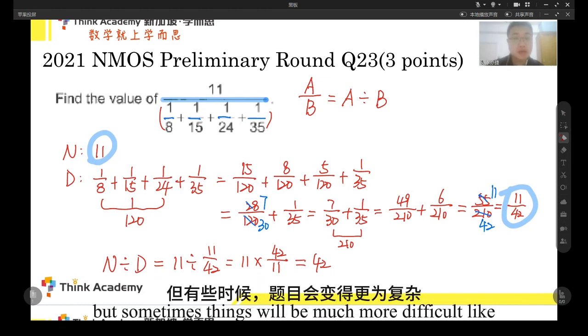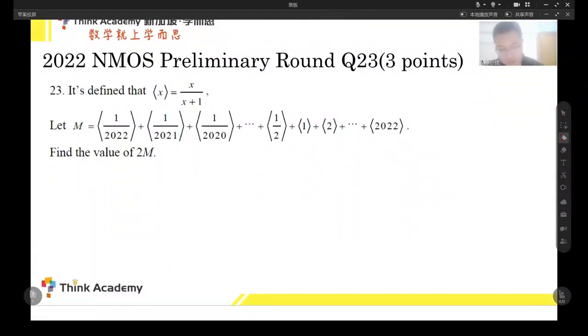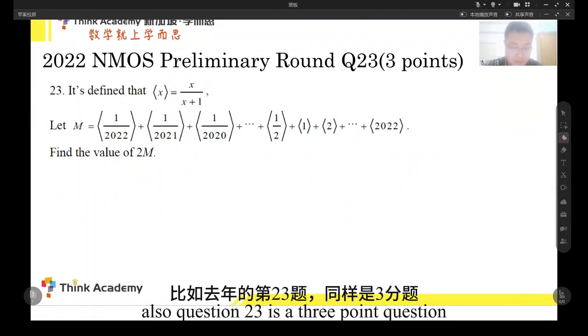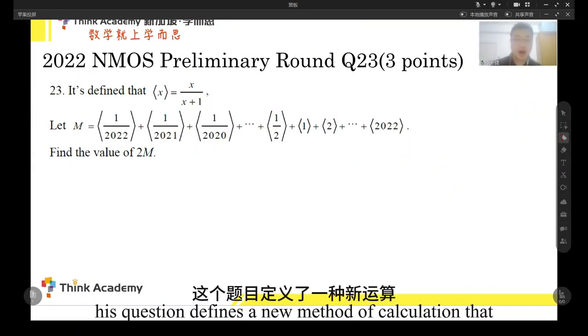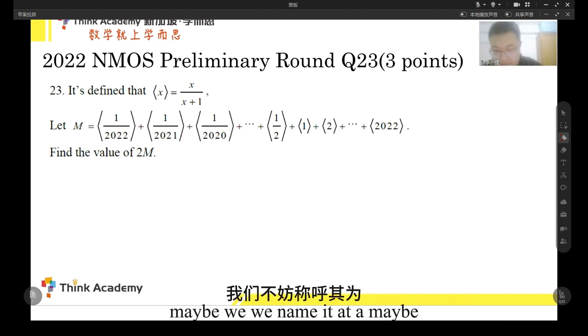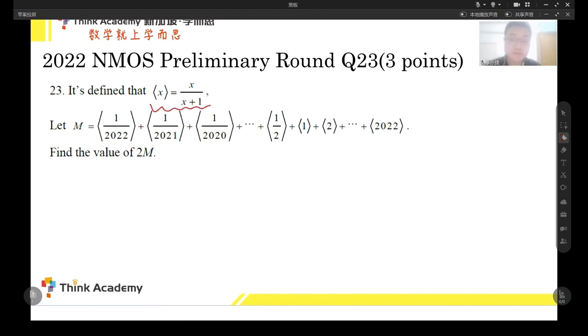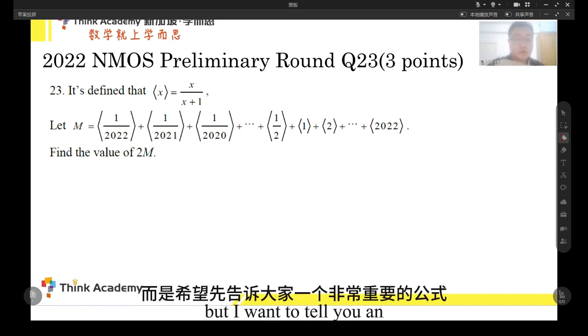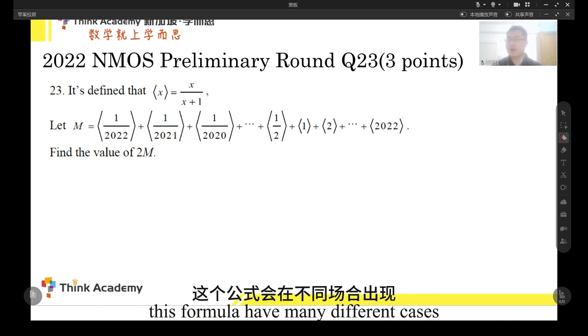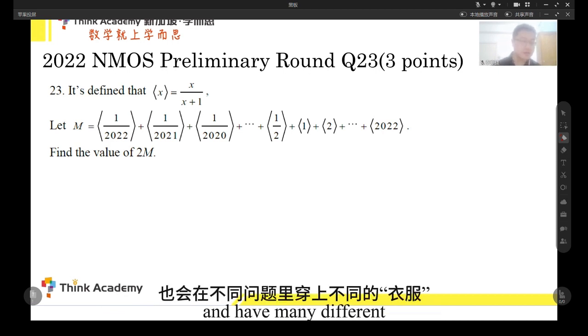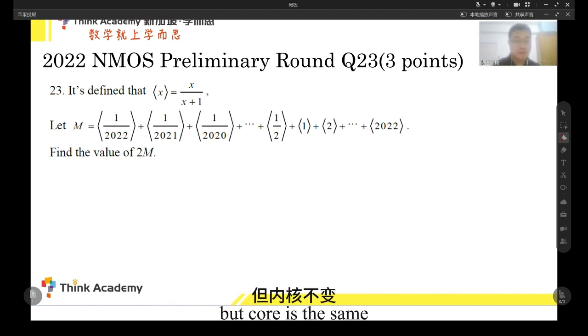But sometimes things will be much more difficult. Like last year, also question 23 is a three-point question. This question defines a new method of calculation that, maybe we name it as mode x. The mode x equals to this fraction. And we will calculate such a terrible formula here, right? So this question, I'm maybe not going to solve it immediately, but I want to tell you an important formula in the complex fraction calculations.